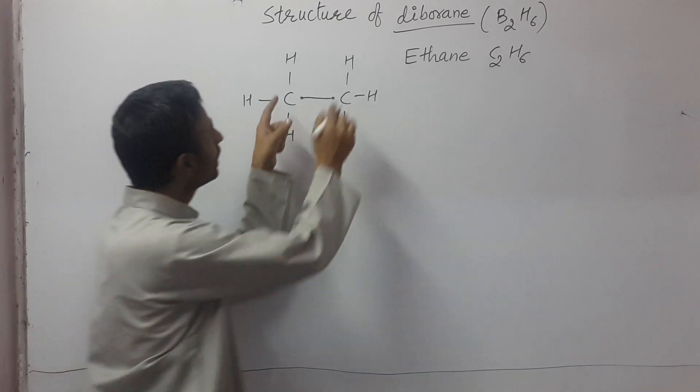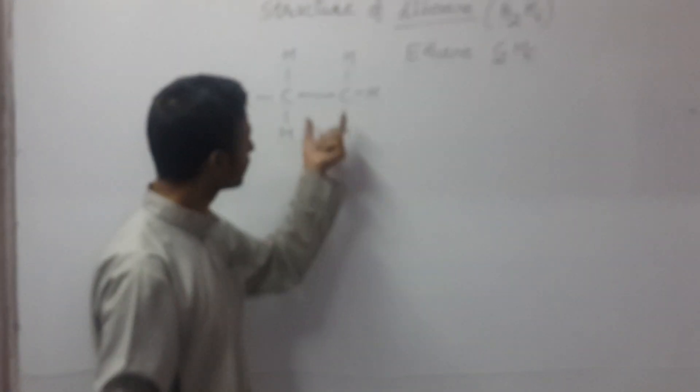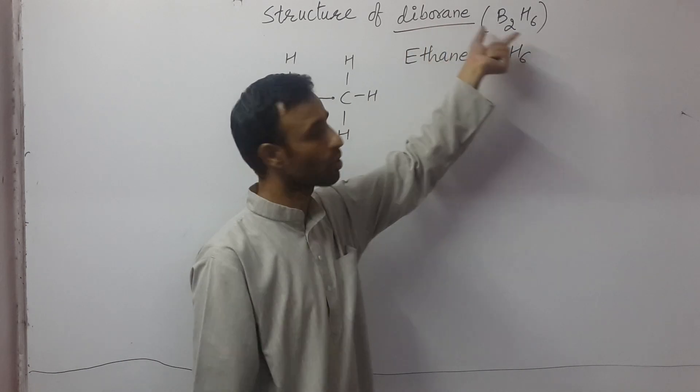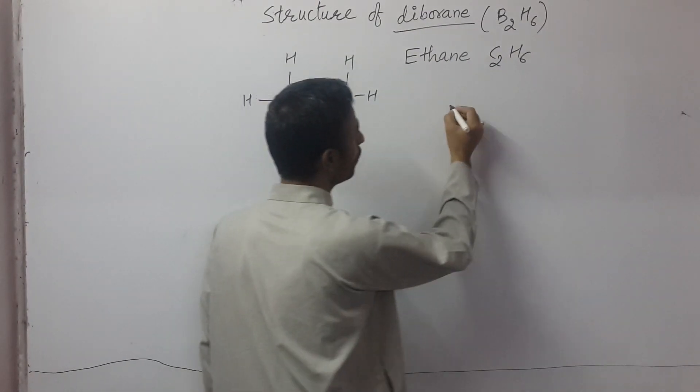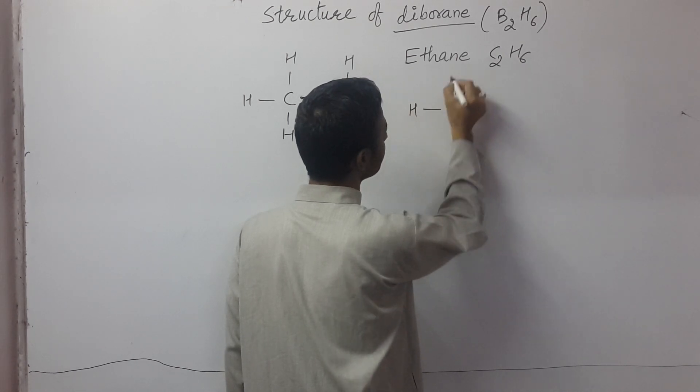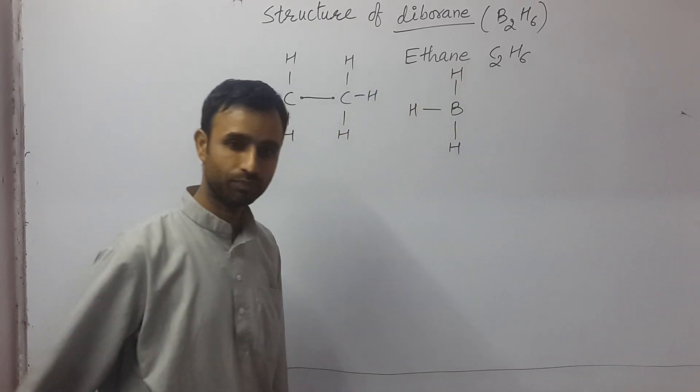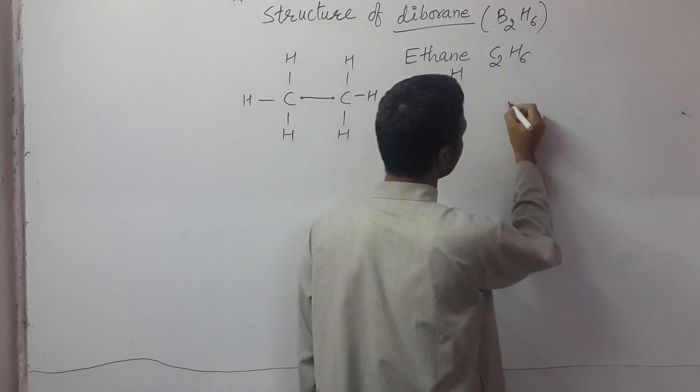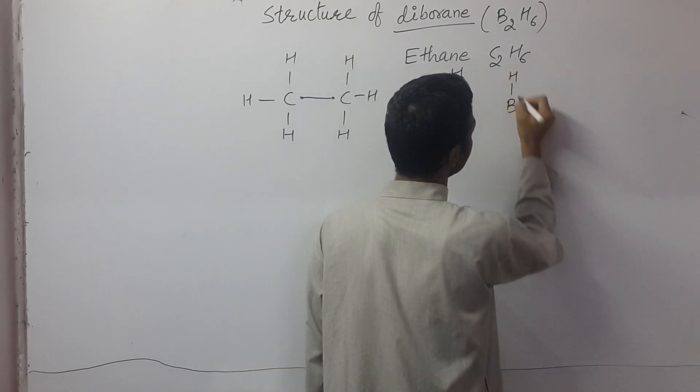Now, if on the same reference we draw the structure of diborane, you know, it looks like there are two BH3 units. So one BH3 is like this, other BH3.